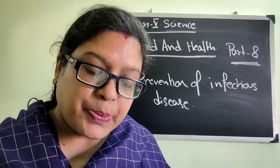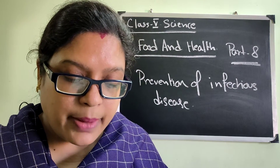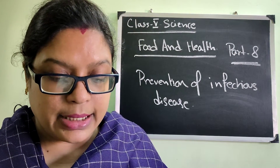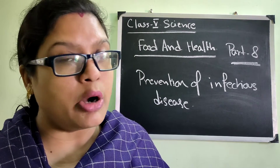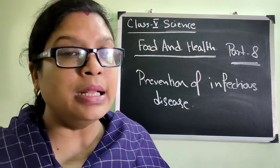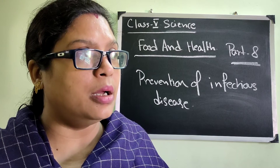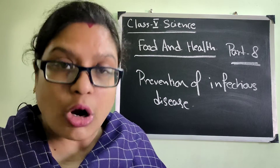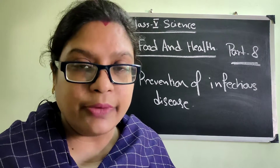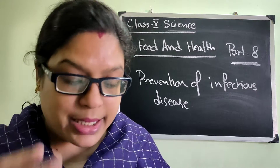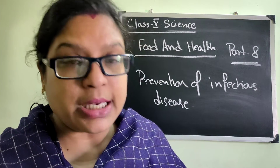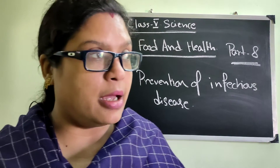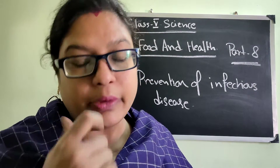Spray insecticides, which are chemicals that kill insects. In big crop fields, insecticides and pesticides are spread to kill the germs which can deteriorate the condition of the crop.